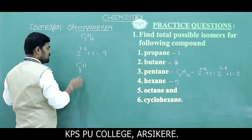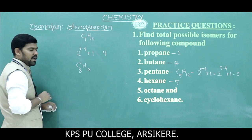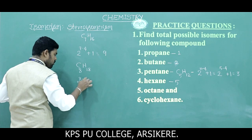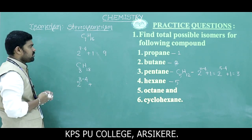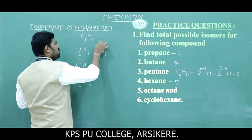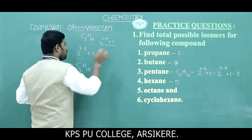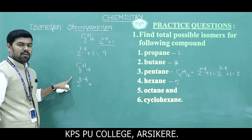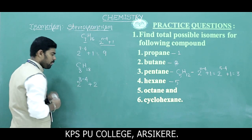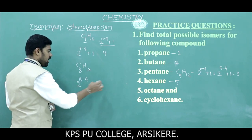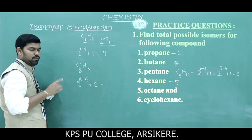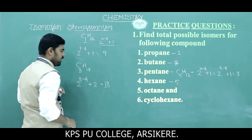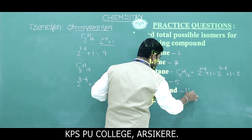For octane (C8H18), since the formula 2^(n−4)+1 applies only up to 7 carbons, for 8 carbon atoms we just use 2 as the base. So for octane: n=8, 8−4=4, 2^4 = 16, 16+2 = 18. Therefore octane has 18 possible isomers.